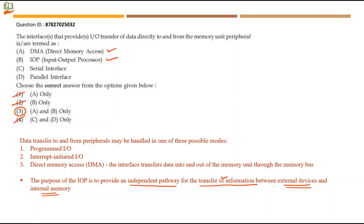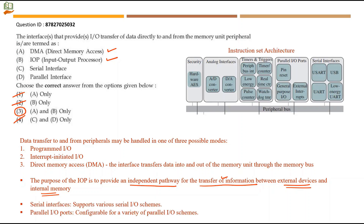A serial interface supports various serial I/O schemes, while a parallel interface is configurable for a variety of parallel I/O schemes. These are different from DMA and IOP in terms of their role in data transfer.